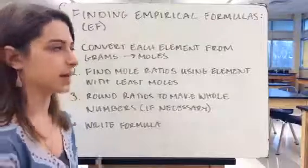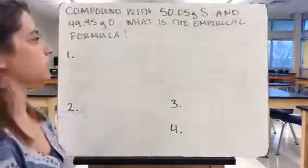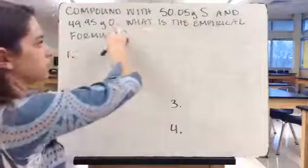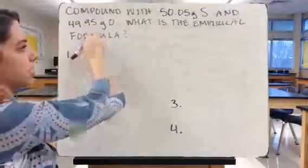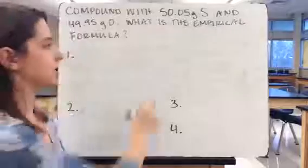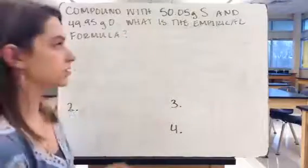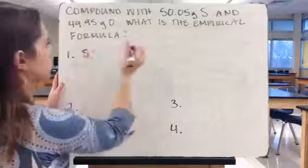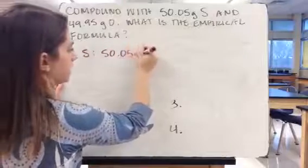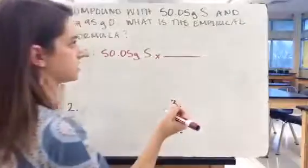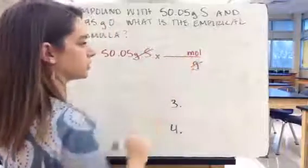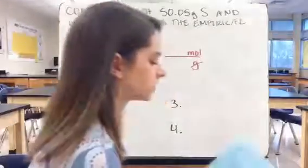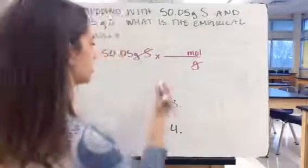In this problem, we have a compound made of sulfur and oxygen: 50.05 grams of sulfur and 49.95 grams of oxygen. We need to find the empirical formula. Step one is to convert each element into moles. For sulfur, we have 50.05 grams. Using the molar mass from the periodic table — 32.066 grams per mole — dividing gives us 1.56 moles of sulfur. It's important to label what you're calculating so you stay organized.